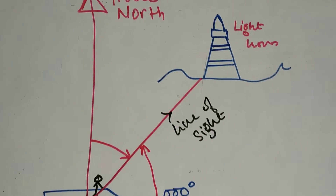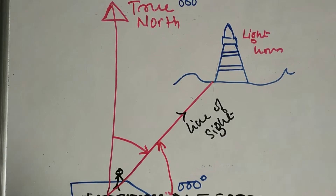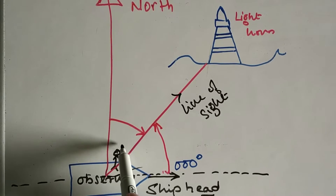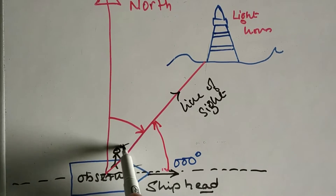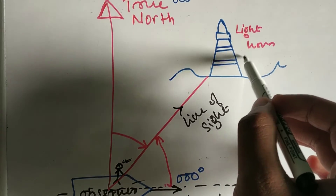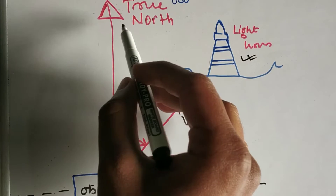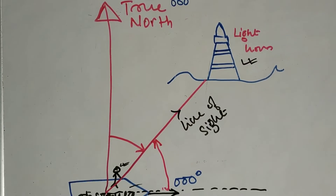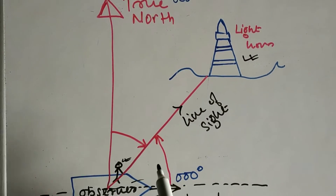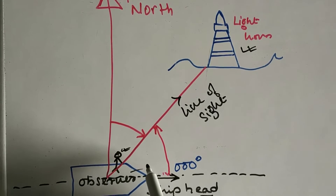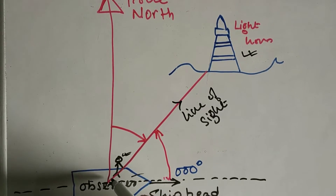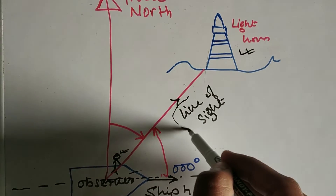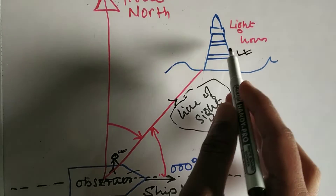In this picture you can see that this is the ship and this is the observer on board the ship. This is the lighthouse, this direction is the true north, and this is the line of sight of the observer toward the object.